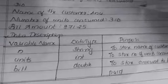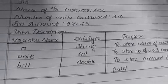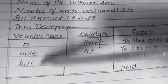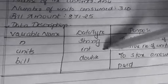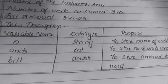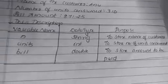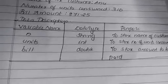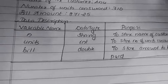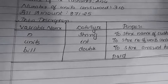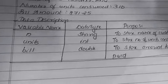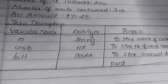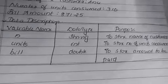The data description of this program uses three variables as given in the question: n of string type, units of integer type, and bill of double type, along with their purpose. While writing the program, don't forget to write comments and the data description table. Write the program logic correctly — without correct logic the program won't execute. Write the program neatly. We'll continue with a new topic in the next class.